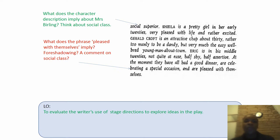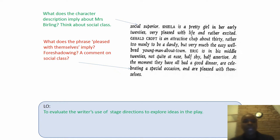The description of Mrs. Birling, who is the social superior to her husband, shows that they made a connection just like Sheila and Gerald are doing — a business connection, because the upper classes married other wealthy people. So they made a social marriage, and we can see that Mr. Birling married his social superior. Now, what does the phrase 'pleased with themselves' imply? Is it foreshadowing or a comment on social class? I want you to think about that as we continue.